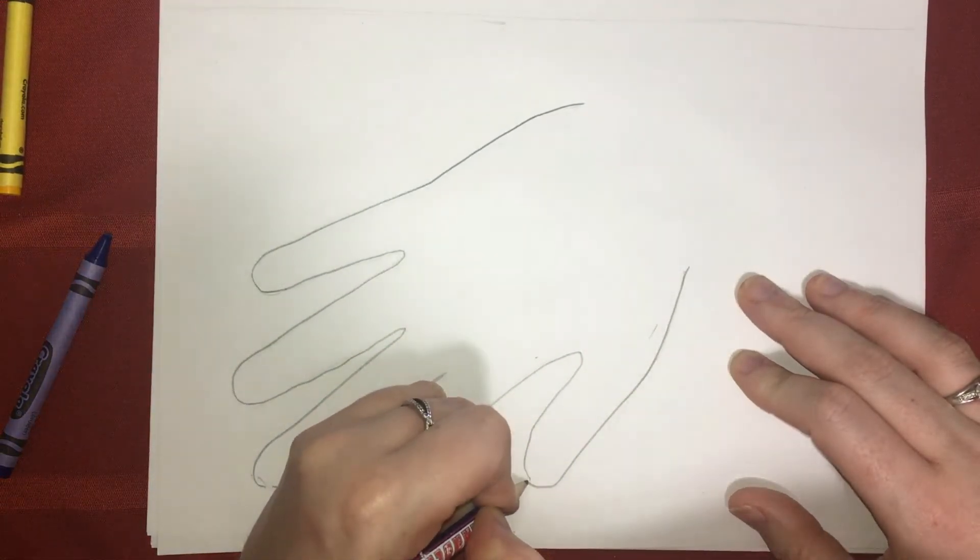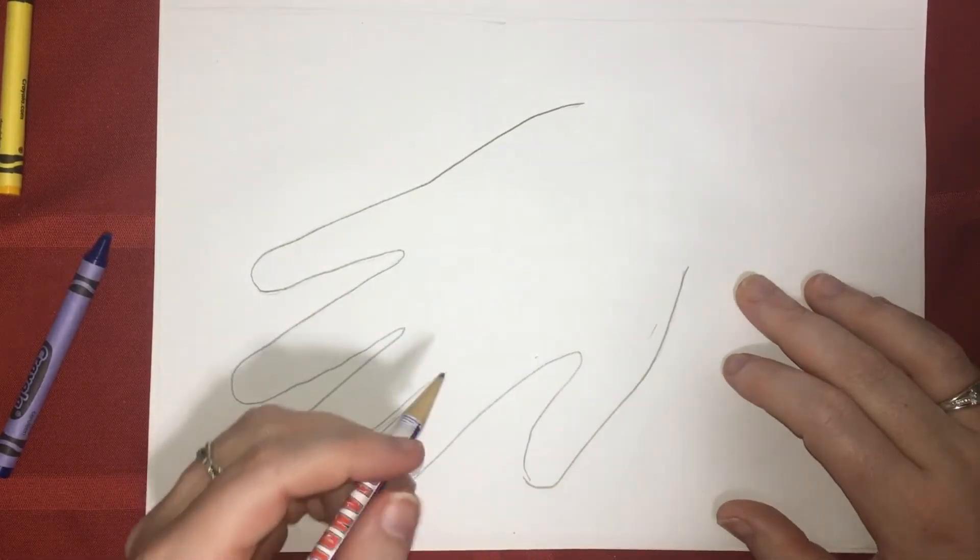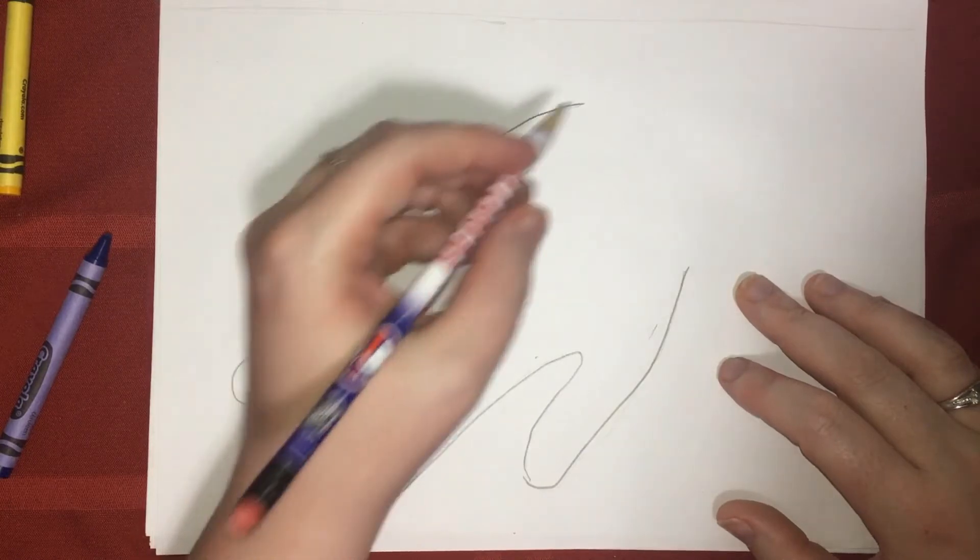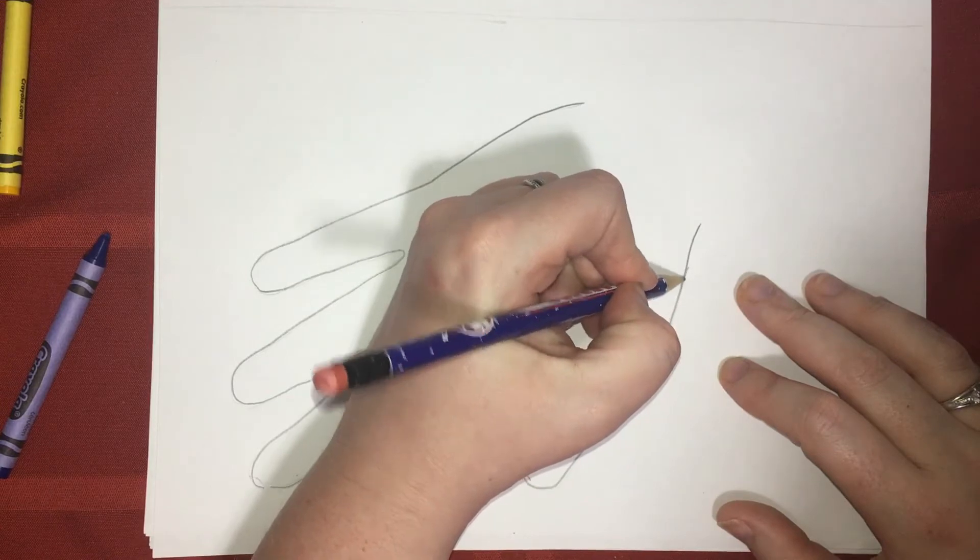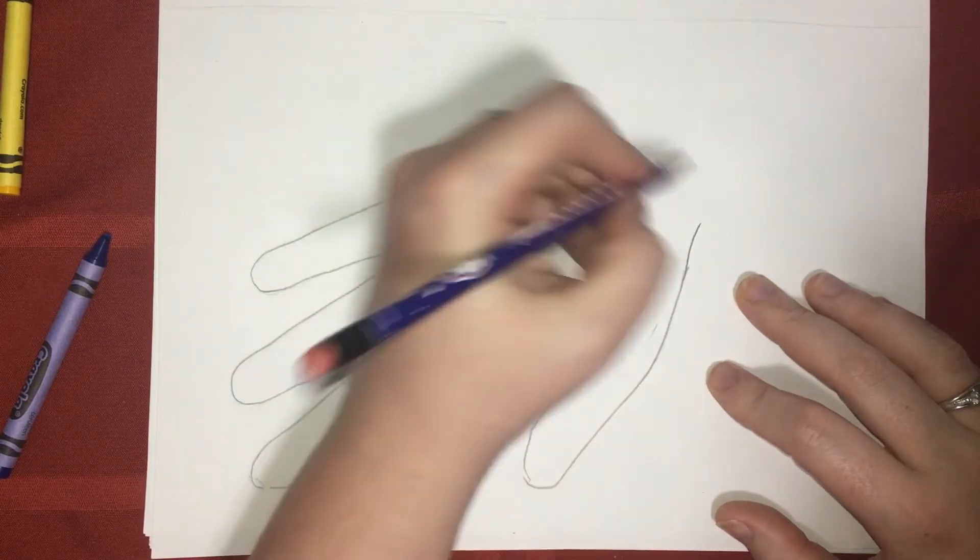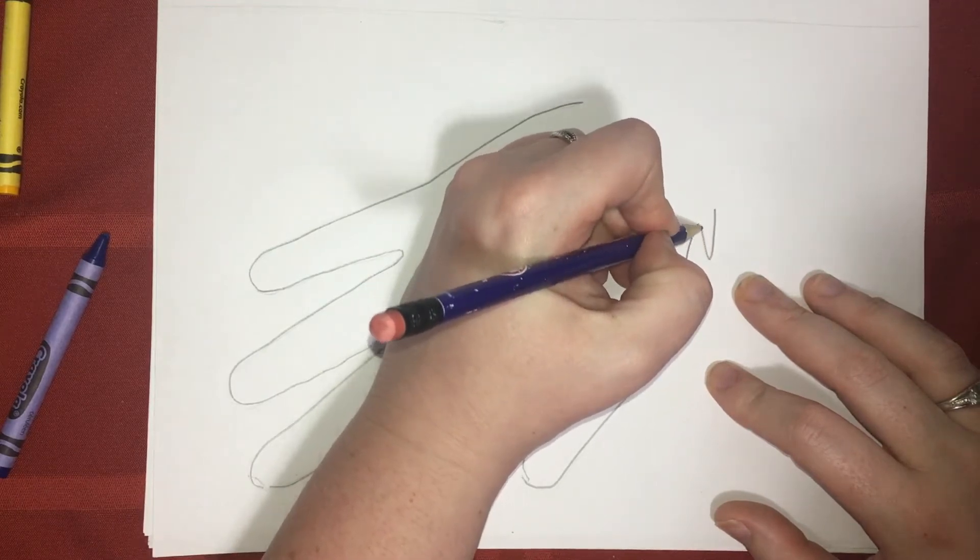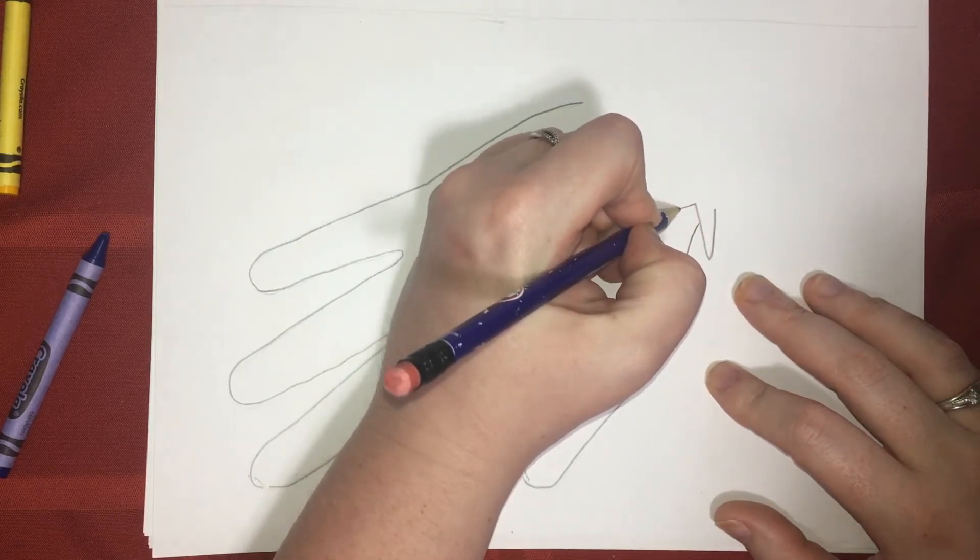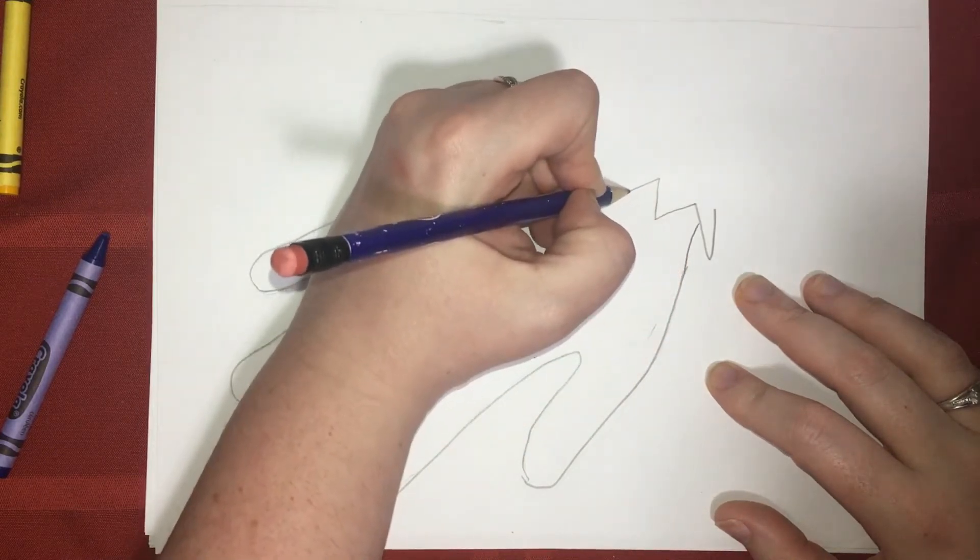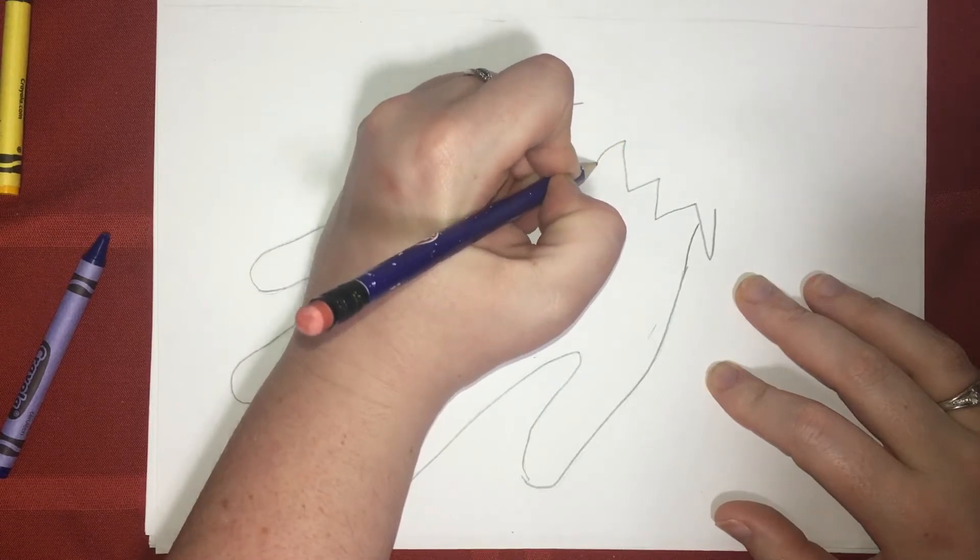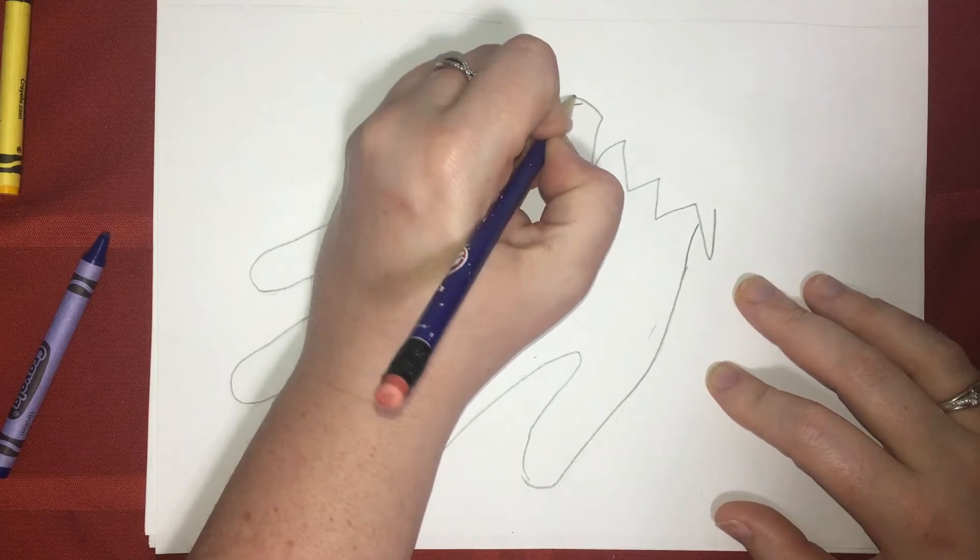I'm going to leave the space open where my wrist would be because that is where the neck will be. Instead of making a straight line connecting it, I'm going to be making a zigzag line. I don't want it to be too perfect because I want it to look more realistic. So some of my V shapes will be wider and some will be smaller and some will be narrower. I'll even make some curves to look more realistic.